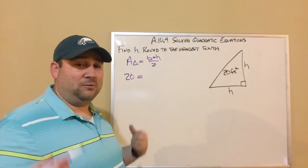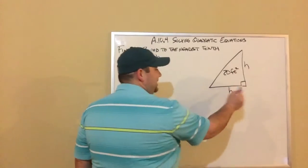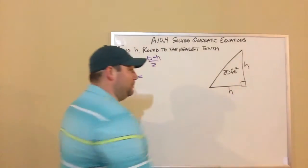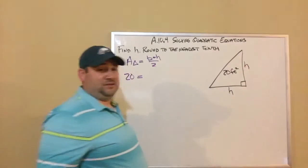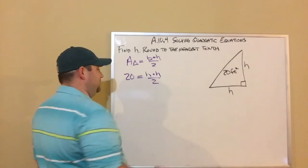So base times height. If you remember in a right triangle, the base and the height are the two sides that meet at the right angle. So in this case, our base is H. Our height is also H. So if I plug those in, it's just going to be H times H divided by 2.